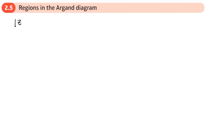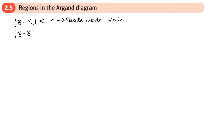We know we have |z - z₁| and we would normally have equal to R. Now if you have less than R, you shade the inside of the circle — that's basically what this region means: all the values that are less than R shade inside a circle.